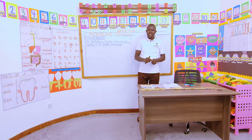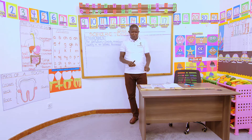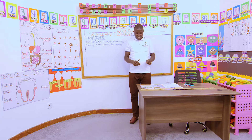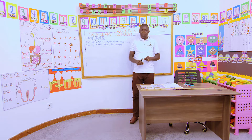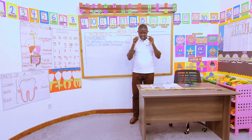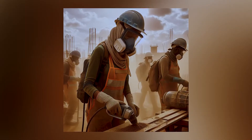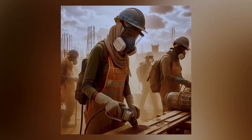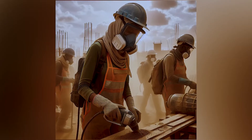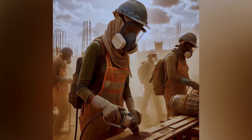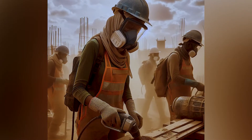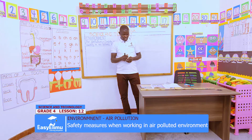Victoria, what can you see in picture number four? People working in the same building construction site wearing masks and wearing goggles. What else are they wearing in picture number four? They are wearing overcoats. That is correct.